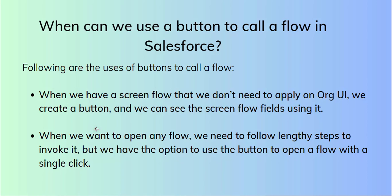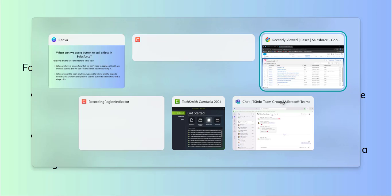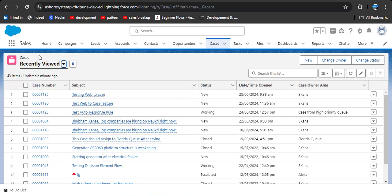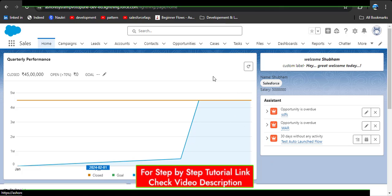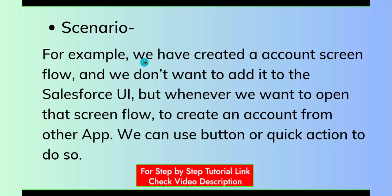When we have a screen flow that we don't want to apply directly on our UI, we can create a button and call that screen flow from it. To better understand, let's take a scenario: for example, we have created an account screen flow and we don't want to add it to the Salesforce UI, but whenever we want to open that screen flow to create an account from another app, we can use a button or action to do so.